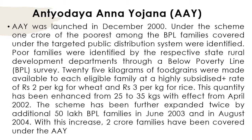Under this scheme, 1 crore of the poorest among the BPL, or below poverty line, families were covered under the Targeted Public Distribution System and were identified. Poor families were identified by the respective state rural development departments through a BPL survey.